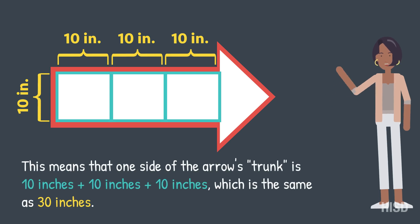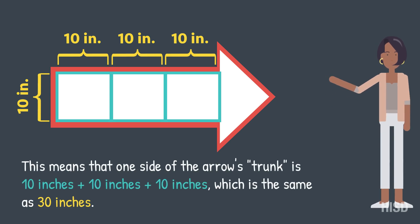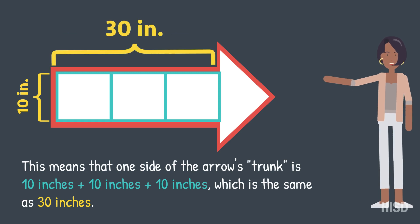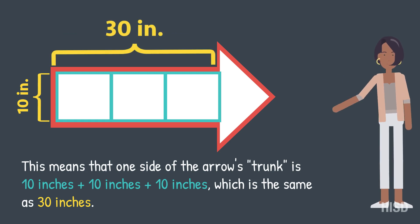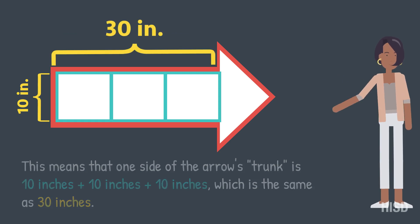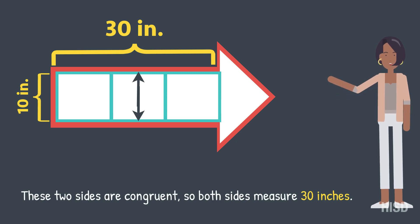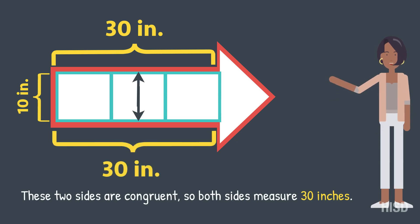This means that one side of the arrow's trunk is 10 inches plus 10 inches plus 10 inches, which is the same as 30 inches. These two sides are congruent, so both sides measure 30 inches.